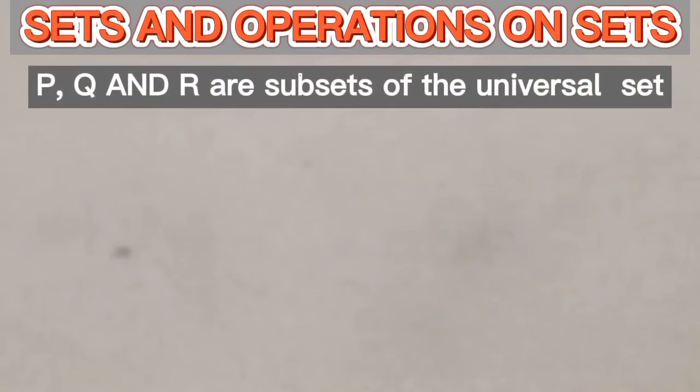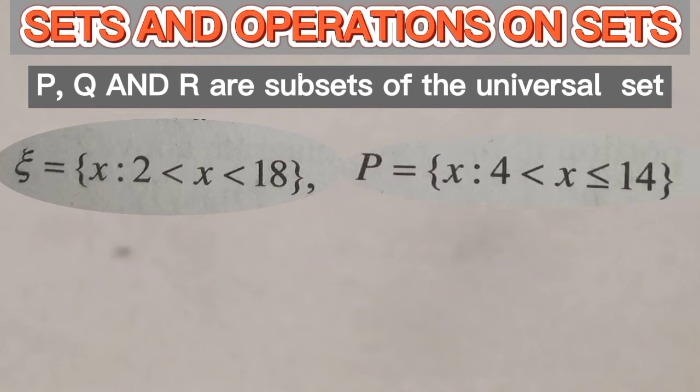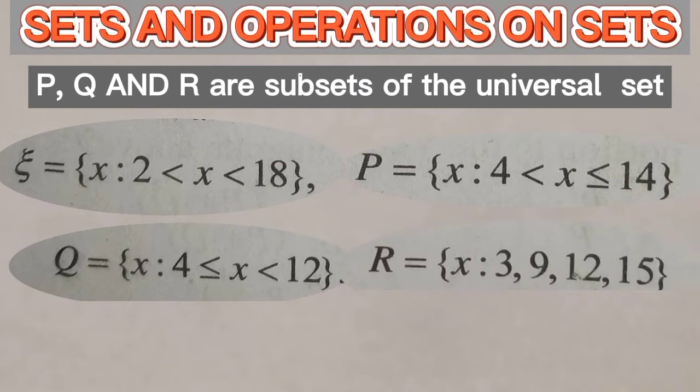P, Q and R are subsets of the universal set. The universal set is x greater than 2 and x less than 18. The set P, x such that x is greater than 4 and x is less than or equal to 14. Set Q, x such that x is greater than or equal to 4 and x is less than 12. The set R is x such that we have the list of elements in the set R. So it will be 3, 9,